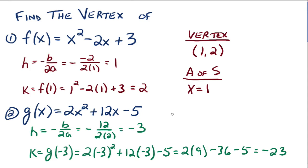So then the vertex for number 2 here for g would be (-3, -23). And the axis of symmetry again would be x = -3. Does everybody see how to use that vertex formula?